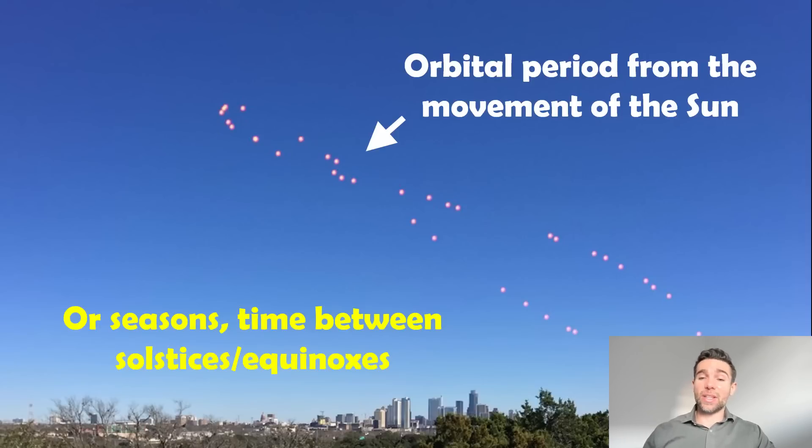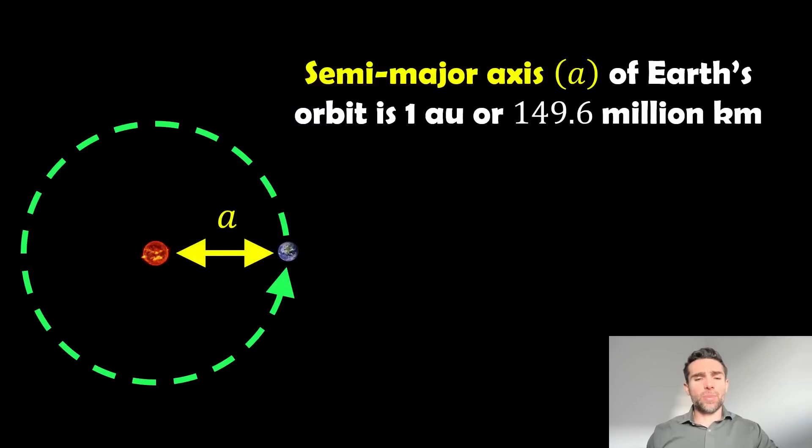Our seasons change. We have the solstice, equinoxes. Those can help us give us the cycle essentially, which is one trip all the way around the Sun, which is the orbital period of Earth. We can use our calculation of the year from the seasons. That can give us our orbital period.